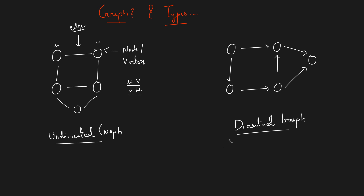In a directed graph we also have nodes and edges, but we call them directed edges — that is why the name is directed graph. If I call one node u and another v, then we can only say there is an edge from u to v; we cannot say there is an edge from v to u. That is what a directed graph is: the edges are directed, meaning you can only go from u to v and cannot come back. There might be cases where there is an edge from u to v and also from v to u, but those are still two separate directed edges, not one undirected edge.